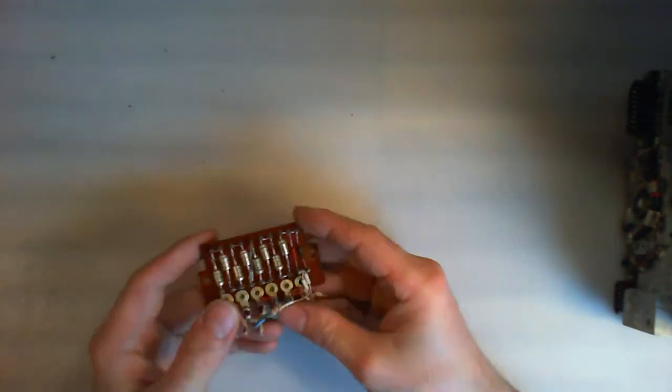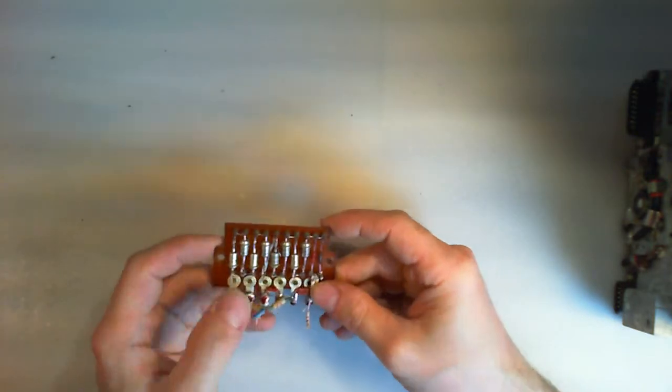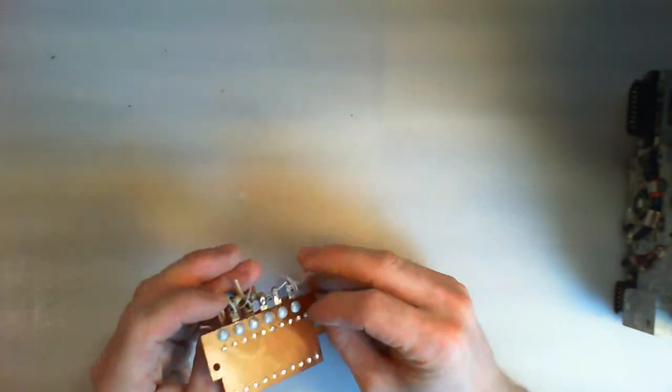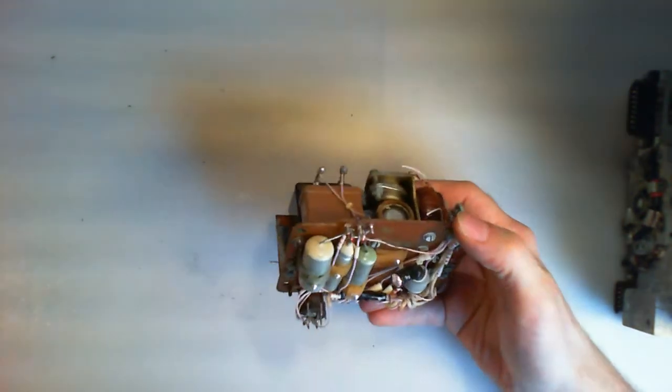Then we are almost done. This is a bunch of diodes on a board, and it is the part which was just behind the power section.